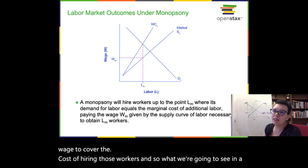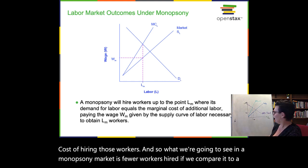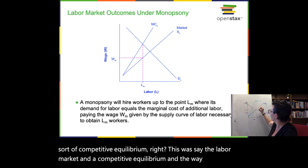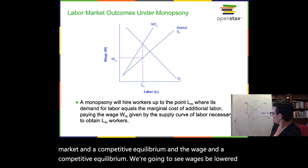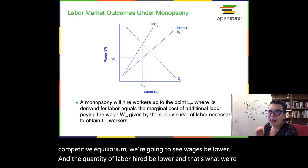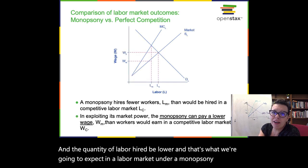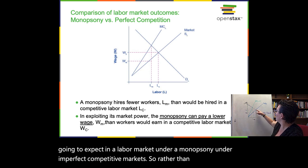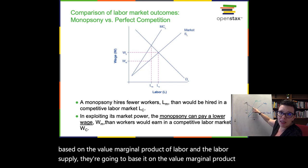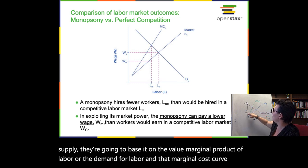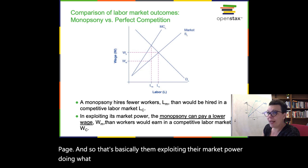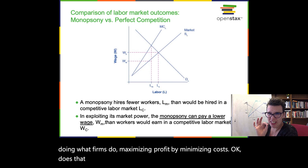Monopsonies will hire workers up to the point where the marginal cost of labor equals the value marginal product of labor, and then pay them the lowest possible wage to cover the cost of hiring those workers. In a monopsony market we'll see fewer workers hired and lower wages compared to a competitive equilibrium. Rather than paying workers based on VMPL and labor supply, they base it on VMPL and the marginal cost curve, then pay the lowest possible wage — exploiting their market power, doing what firms do: maximizing profit by minimizing costs.